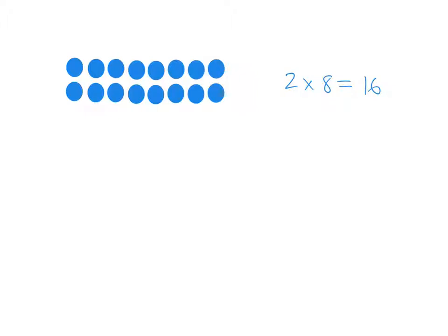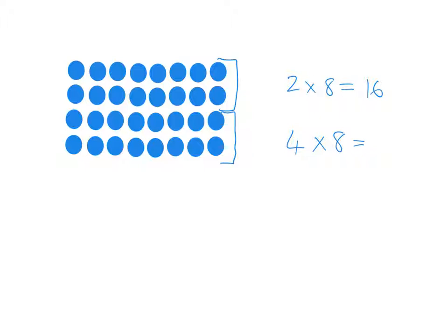But this array idea will show me that if I know my 2 times table, my 4 times table is really easy. If I want to know what 4 times 8 is, then picturing the array for 4 times 8, I can just see that 4 times 8 is just 2 lots of 2 times 8. It's just double 2 times 8. So all I have to do is double 16, and I'll get the answer of 32.